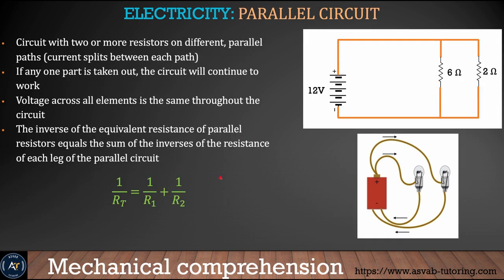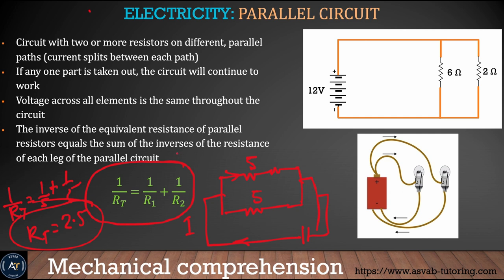A parallel circuit has components side by side, like rail lines. The current splits into two parts. The total resistance formula for a parallel circuit is 1/RT = 1/R1 + 1/R2. For example, with two 5-ohm resistors in parallel: 1/RT = 1/5 + 1/5, giving RT = 2.5 ohms. When resistors are connected in parallel, resistance decreases; in series, it increases.